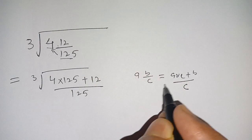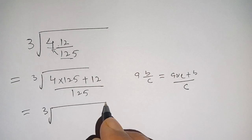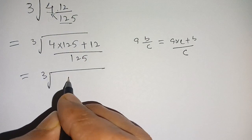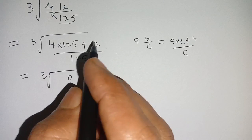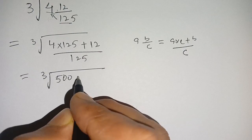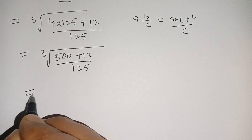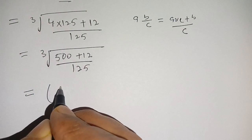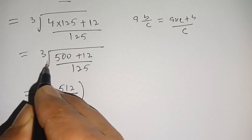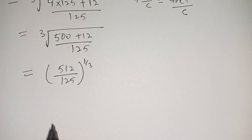Applying this formula, we get cube root of: 4 times 125 — that is 4 times 100 is 400, plus 4 times 25 is 100, giving 500 — plus 12 divided by 125. So we get 500 plus 12, which becomes 512, divided by 125, whole to the power of 1 divided by 3.